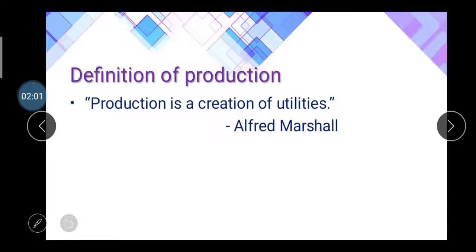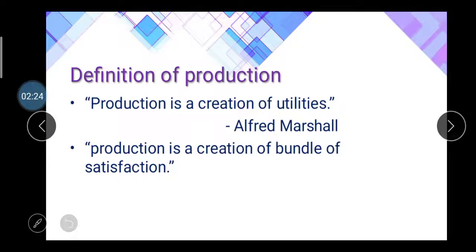Utility means you create value from raw material. For example, you take cotton and convert it into clothes — that is one type of production process. Production is also defined as a creation of a bundle of satisfaction, according to Philip Kotler. He states that production creates satisfaction by converting raw materials into effective finished goods, giving satisfaction to the customer.